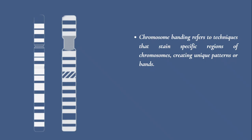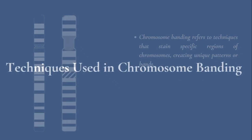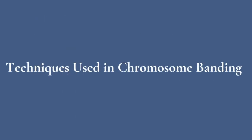Chromosome banding refers to techniques that stain specific regions of chromosomes, creating unique patterns or bands. These bands help identify chromosomal abnormalities, structural changes, and even map genetic information. There are various chromosome banding techniques.